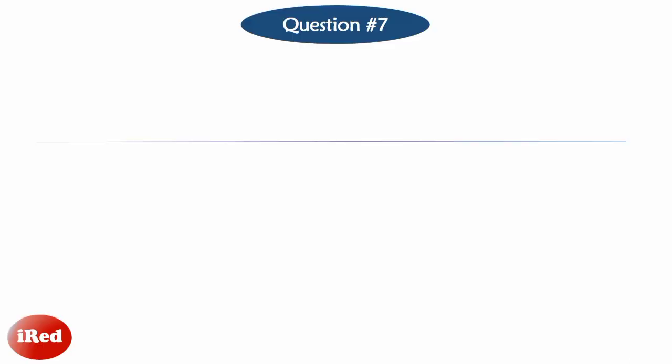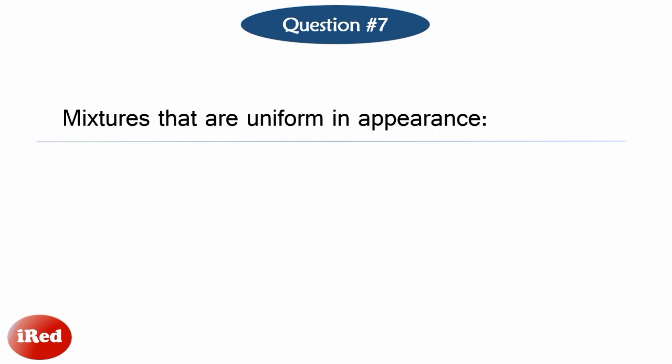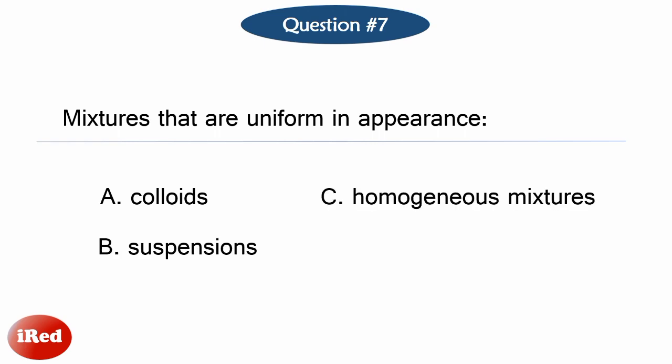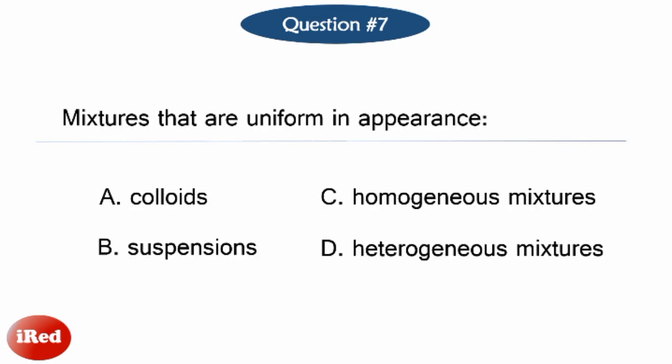Number seven: Mixtures that are uniform in appearance. Letter A: Colloids. Letter B: Suspensions. Letter C: Homogeneous mixtures. Or letter D: Heterogeneous mixtures.